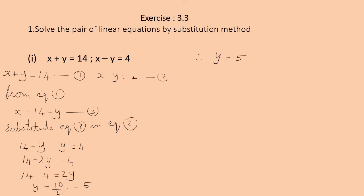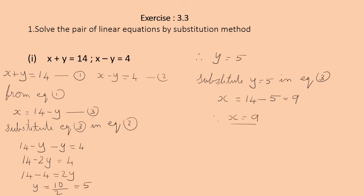Now get the value of x. Substitute y = 5 in equation 3: x = 14 − y = 14 − 5 = 9. Therefore, x = 9. The solution of the equation is x = 9 and y = 5.